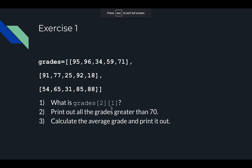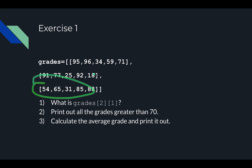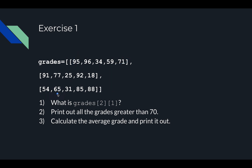So what is grades[2][1]? The first value represents each of the inner arrays — the rows. So this is going to be the row at index 2, which is the third array: 0, 1, 2. Then it's going to be index 1 in grades[2]: 0, 1. So the answer is 65. grades[2][1] is the element at index 1 in the array at index 2 in grades, so 65 is the answer.